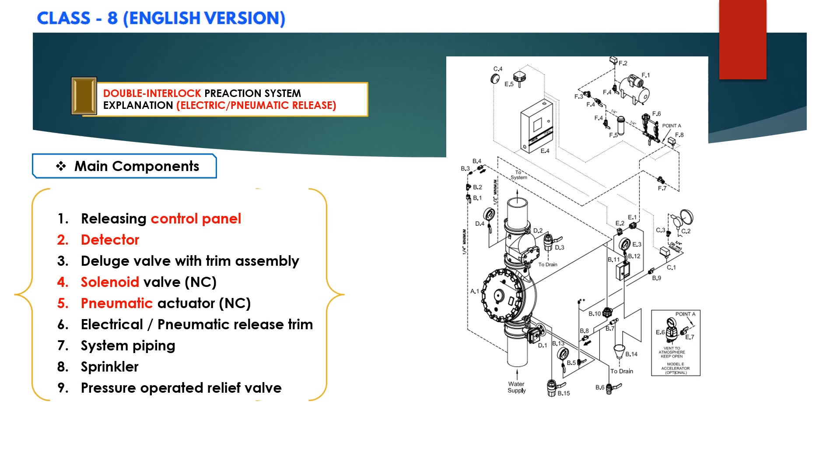there are various main components like releasing control panel, detector, deluge valve with this complete trim assembly configuration. We have E2 solenoid valve and E1 pneumatic actuator with electric pneumatic trim E3.